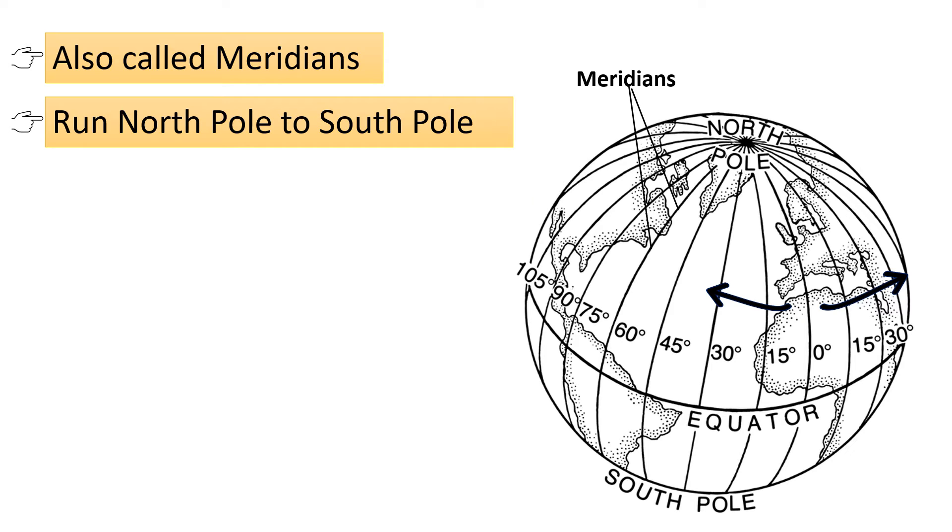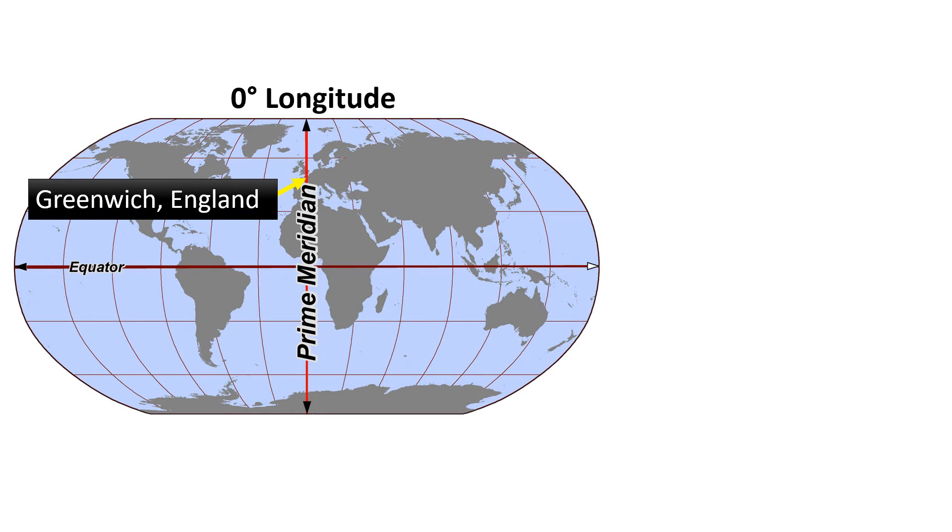They measure the east-west position of a point. The Prime Meridian, which is located in Greenwich, England, serves as a starting point for measuring longitude and it is located on zero degree longitude.